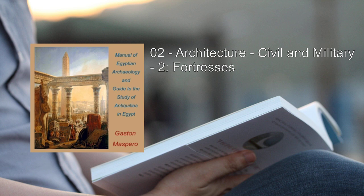End of chapter one, section two. Recording by Timothy Ferguson, Gold Coast, Australia. Chapter one, part three of Manual of Egyptian Archaeology and Guide to the Study of Antiquities in Egypt by Gaston Maspero, translated by Amelia B. Edwards. This LibriVox recording is in the public domain. Recording by Timothy Ferguson. Chapter 1: Architecture, Civil and Military. Section 3: Public Works.